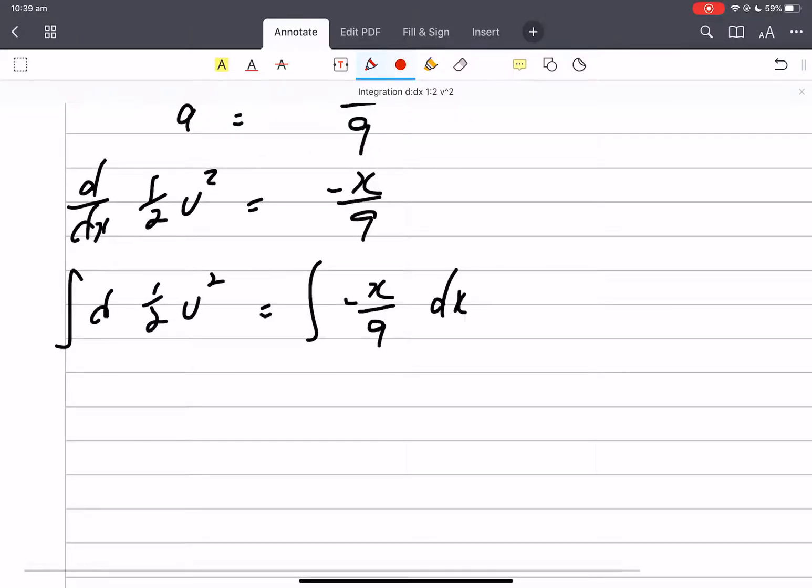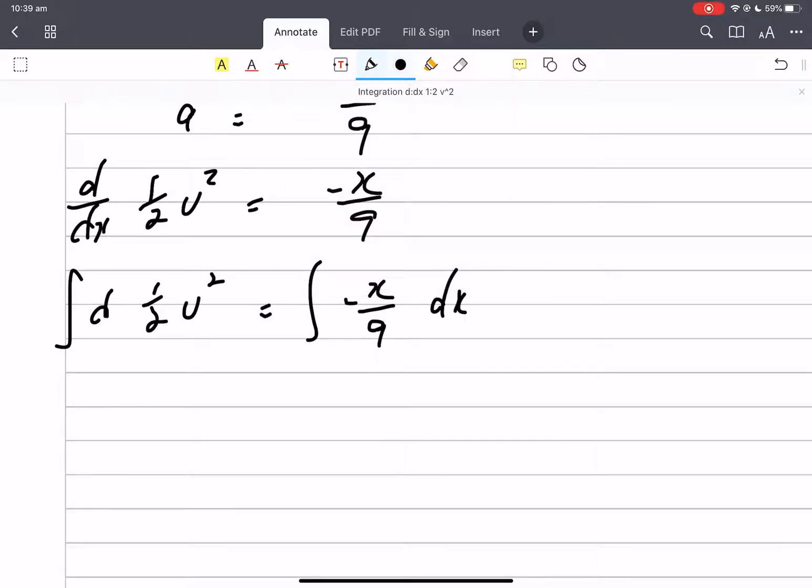So on my left hand side, what actually happens is it just goes to a half v squared, and then we're just integrating on the right hand. So that would be minus x squared on 18 plus c.